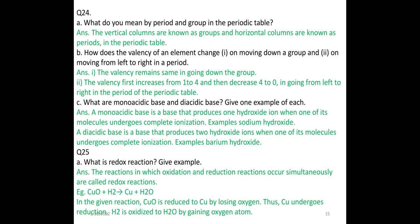What do you mean by period and group of a periodic table? The vertical columns are known as groups and the horizontal columns are known as periods. How does the valency of an element change moving down a group and left to right across a period? The valency remains the same moving down a group. Moving from left to right across the periodic table, valency first increases from 1 to 4, then decreases from 4 to 0.